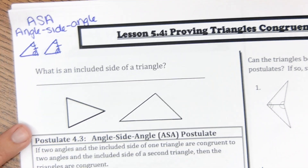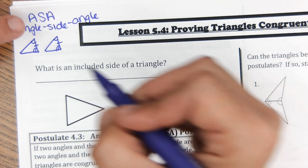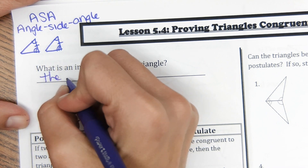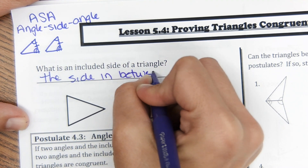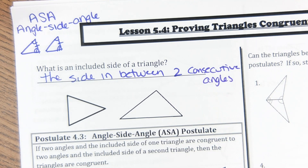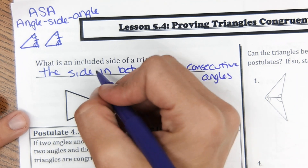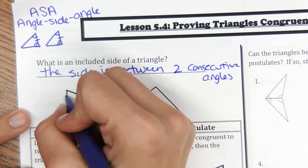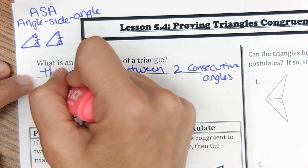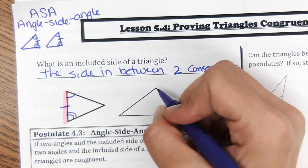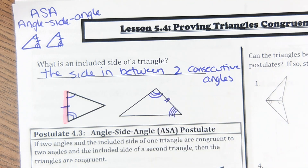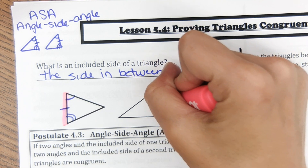Looking at the notes: what is an included side of a triangle? An included side is the side in between two consecutive angles. For example, these two angles here — this is the included side. Or for another triangle, if you pick these two angles, this would be the included side in between those two angles.